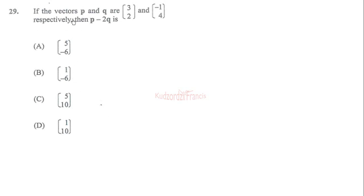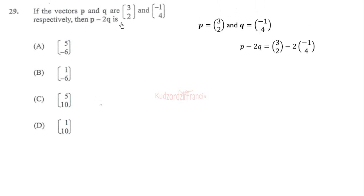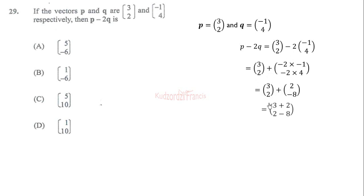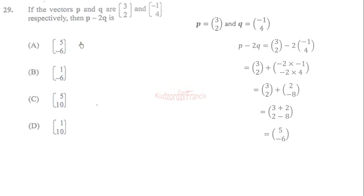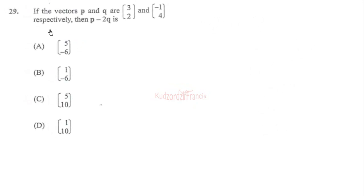Question 29: vectors P and Q are given. We need to find P minus 2Q. Substituting, we multiply negative 2 by each component of Q: this gives positive 2 and negative 8. Adding corresponding entries: 3 plus 2 equals 5, and 2 plus negative 8 equals negative 6. So P minus 2Q equals (5, negative 6). The correct answer is option A.